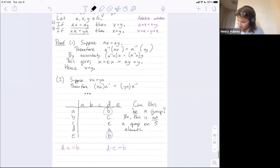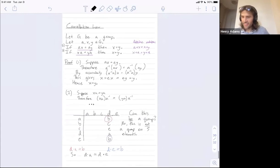So in particular, d times a is equal to d times e. Now what does the cancellation law allow me to say? Since d times a is equal to d times e, this implies that a is equal to e by the cancellation law.